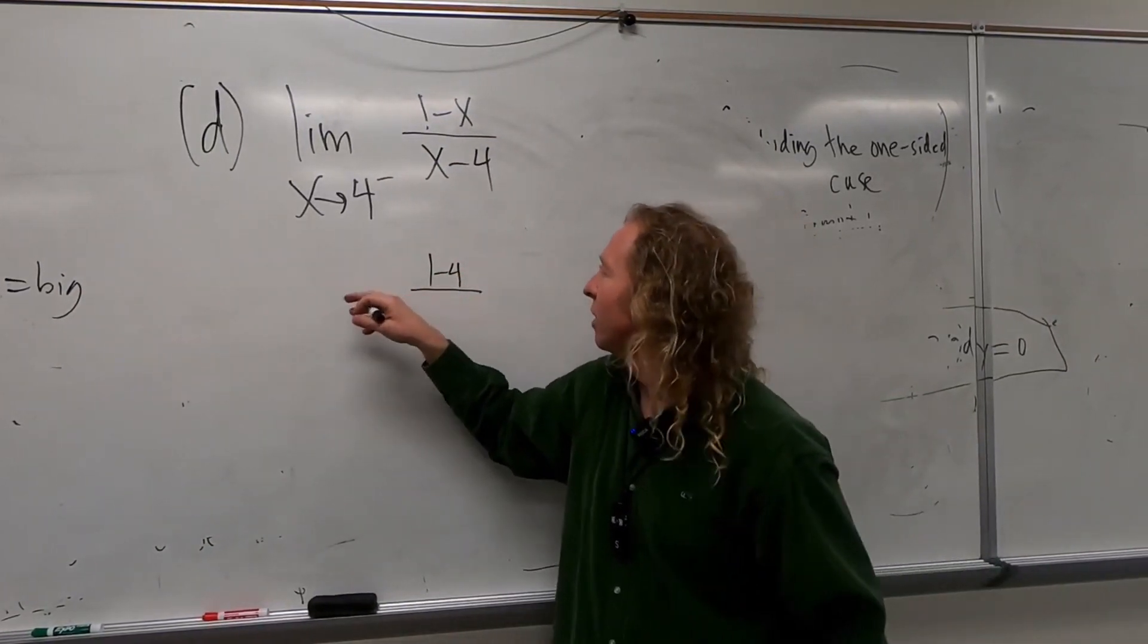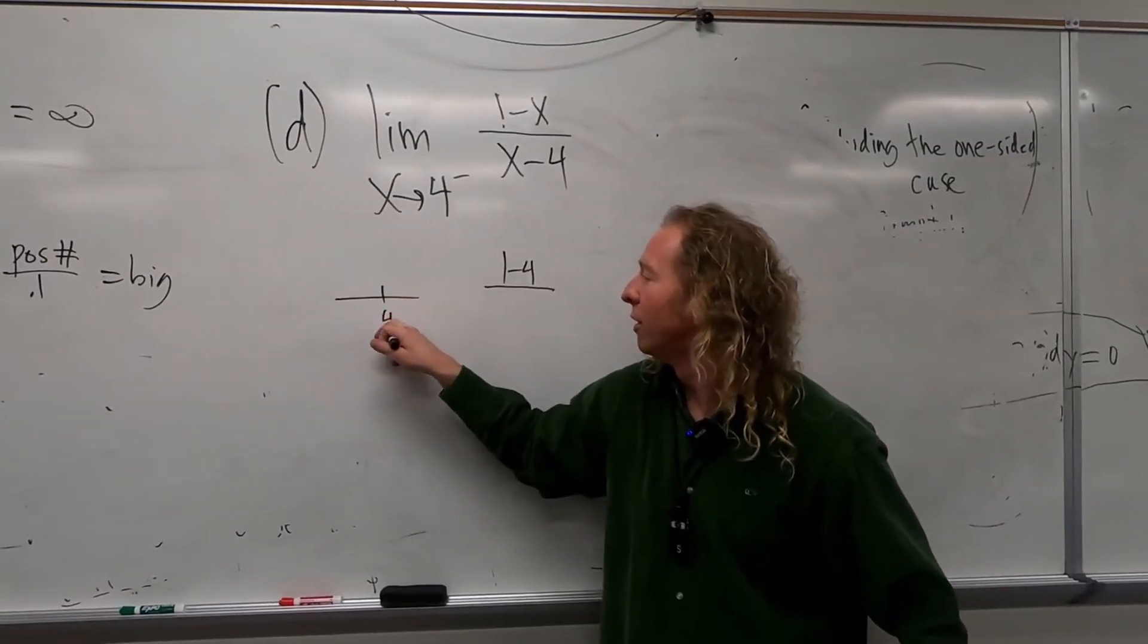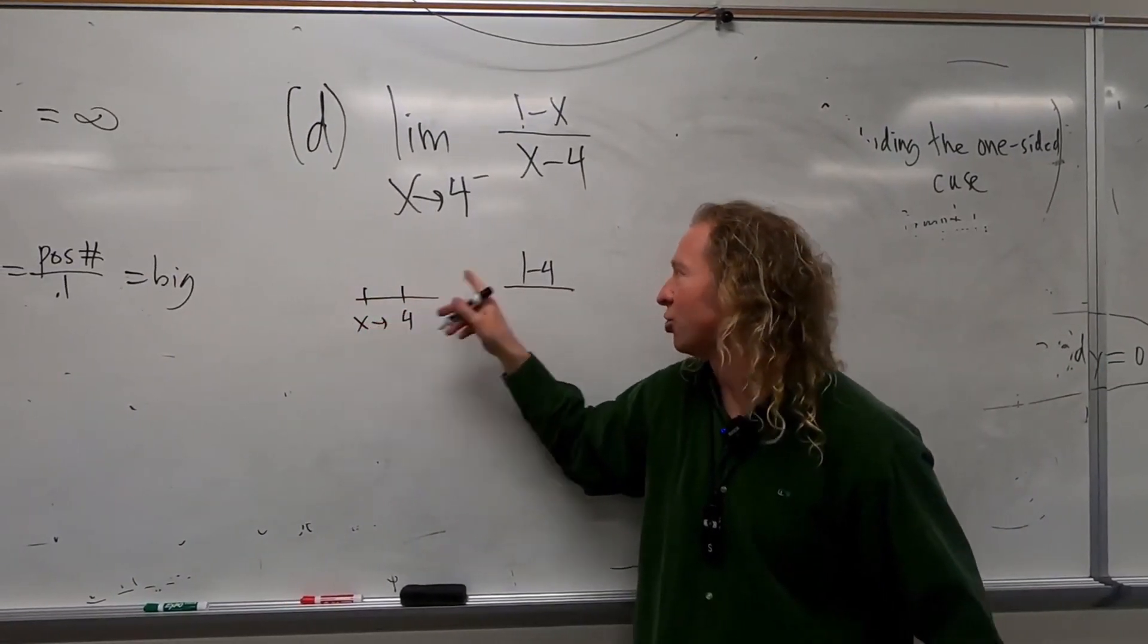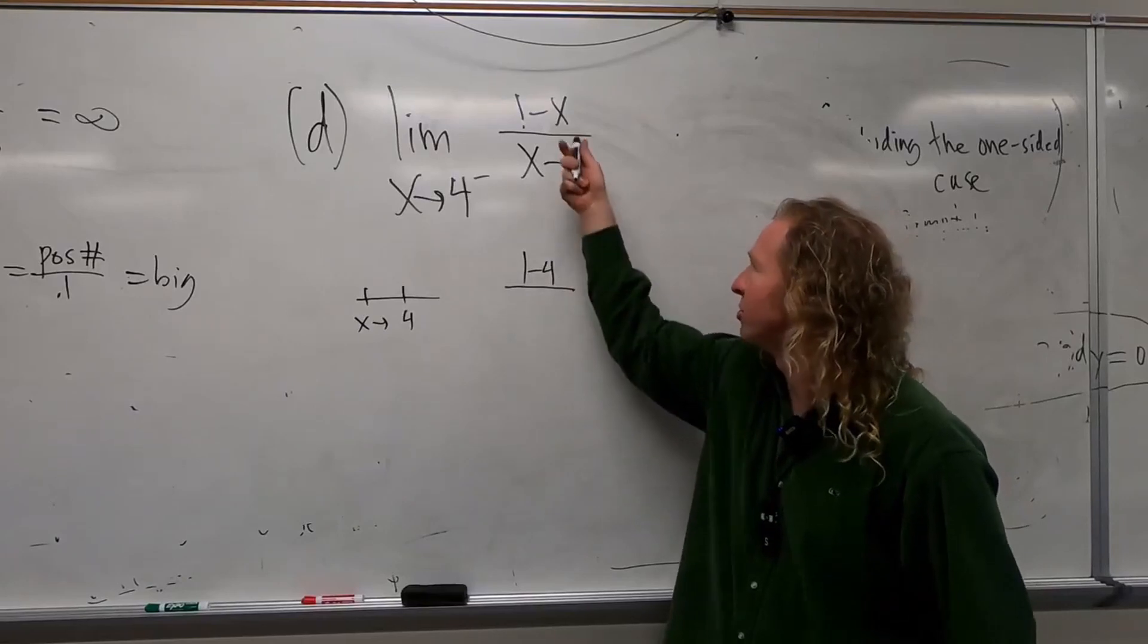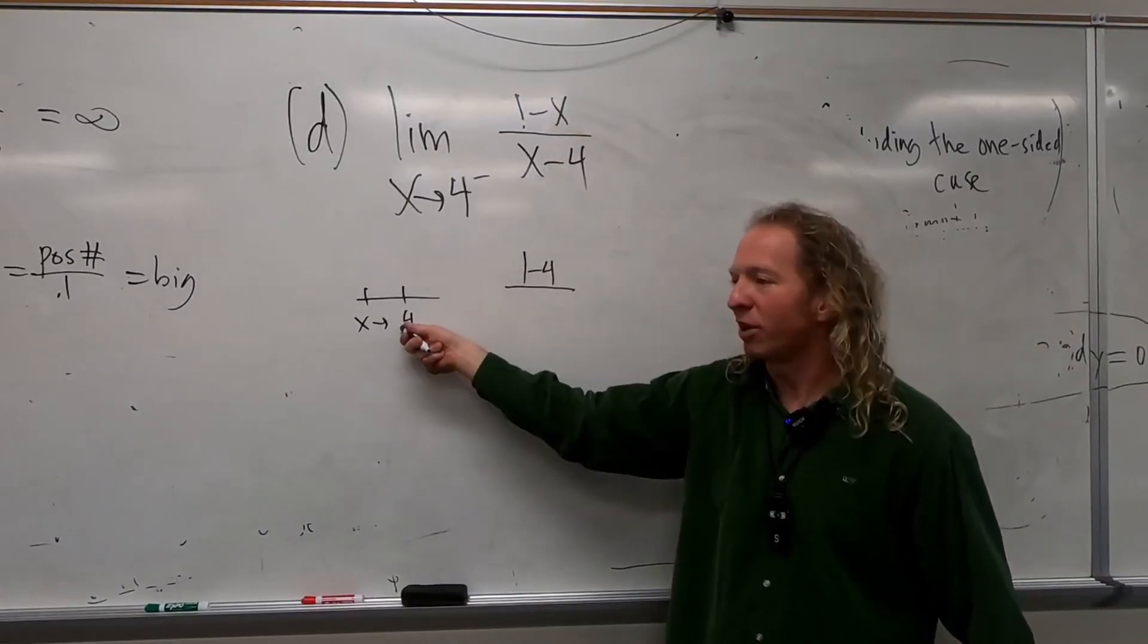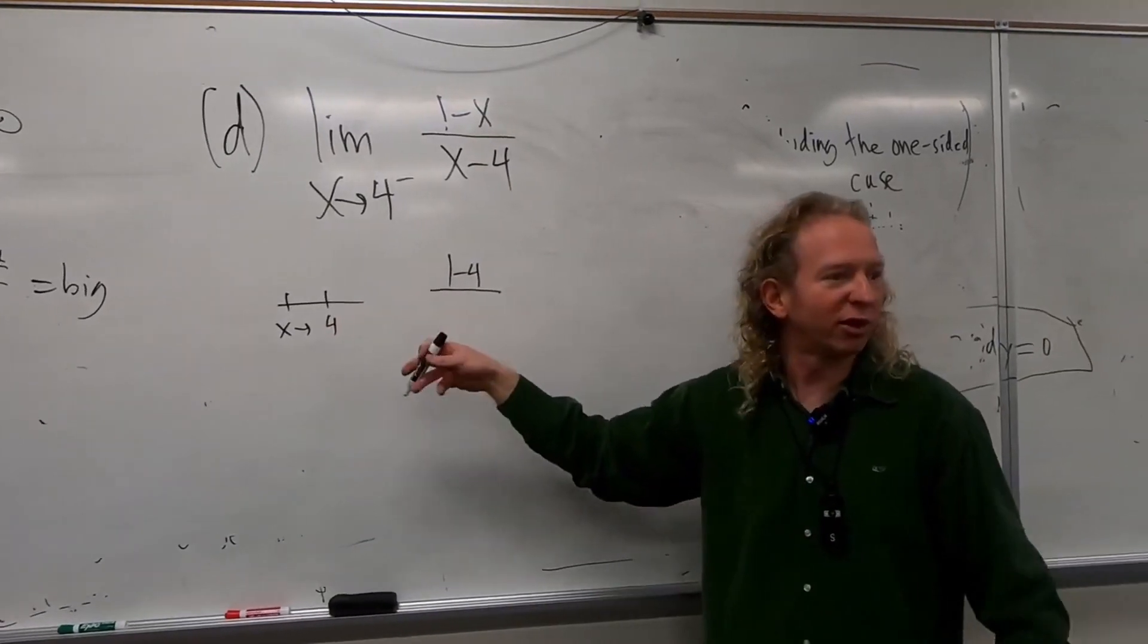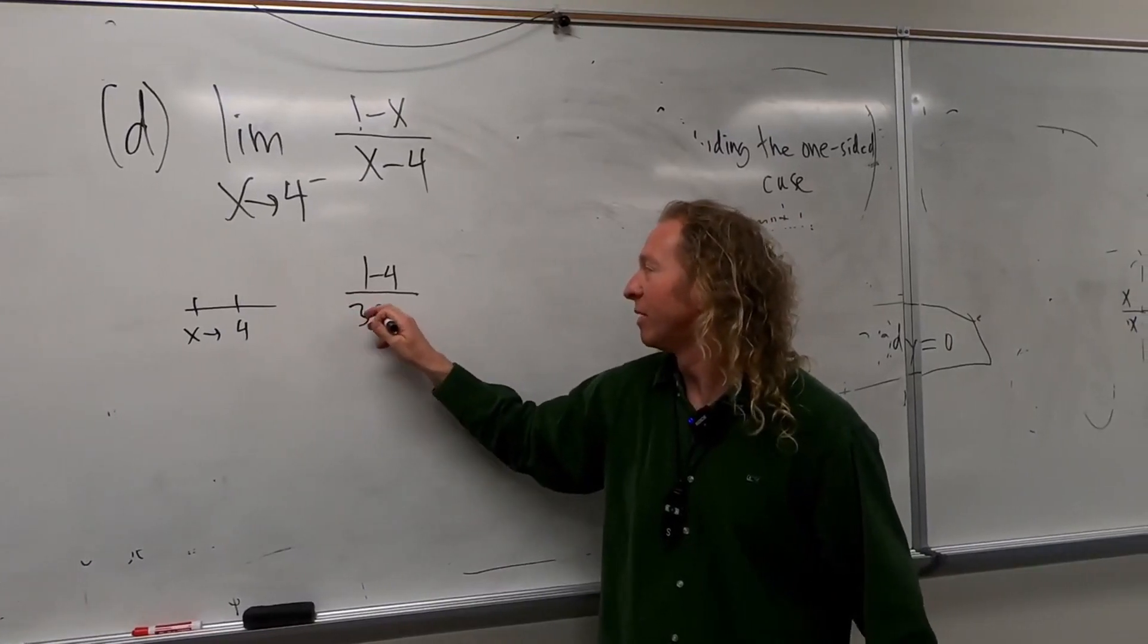And then think about 4. So from the left, this is so bad, we're plugging in different numbers. It's just so bad. 3.9, right? 3.9 would work. So 3.9 minus 4.